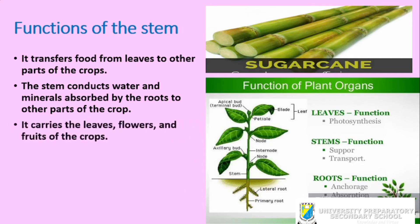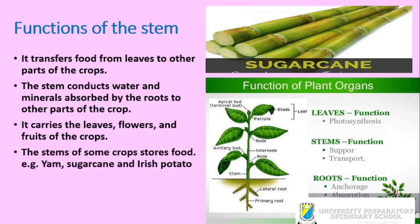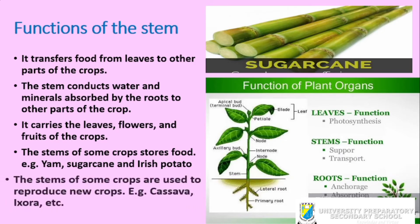The stem also carries the leaves, flowers, and fruits of the crop. Another function of the stem is food storage — yam is an example of a stem crop where the plant keeps storing food in its stem, and the stem becomes enlarged until you have a yam tuber. The Irish potato is also an example of crops that store food in a stem. The stems of some crops are also used to reproduce new crops — an example is cassava, whose stem is used to propagate or reproduce new ones.